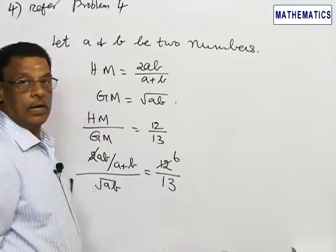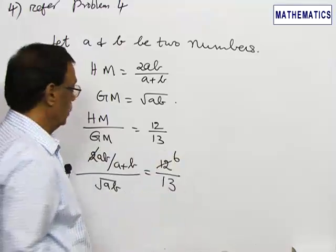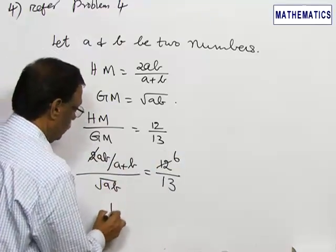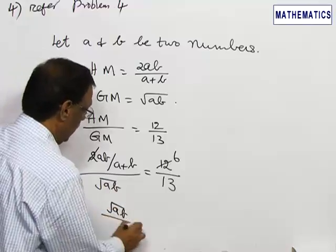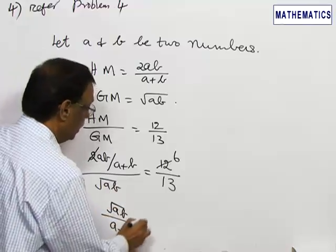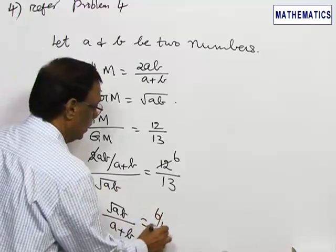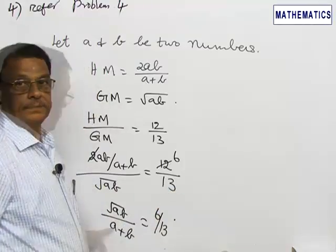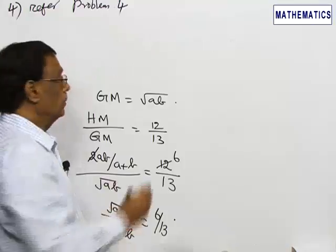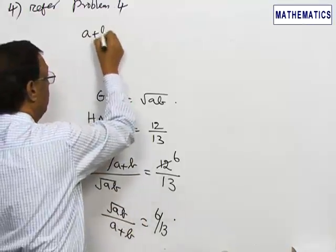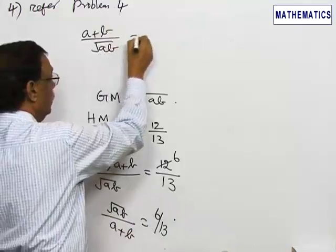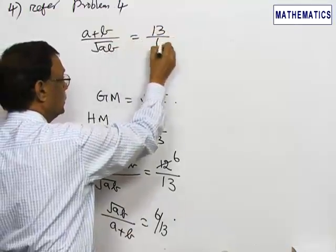We can remove the common factor 6 2, so you have root AB by A plus B is equal to 6 by 13. Inverting this you have A by A plus B by root AB is equal to 13 by 6.